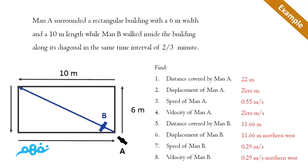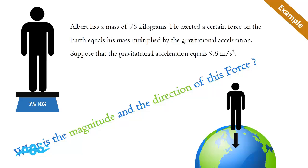Another example: Albert has a mass of 75 kilograms. He exerted a certain force on the Earth, which equals his mass multiplied by the gravitational acceleration. Suppose that the gravitational acceleration equals 9.8 meters per second squared.